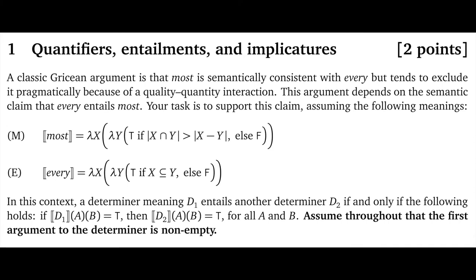Question one: quantifiers, entailments, and implicatures, worth two points. A classic Gricean argument is that 'most' is semantically consistent with 'every', but tends to exclude it pragmatically because of a quality-quantity interaction. This argument depends on the semantic claim that 'every' entails 'most'.